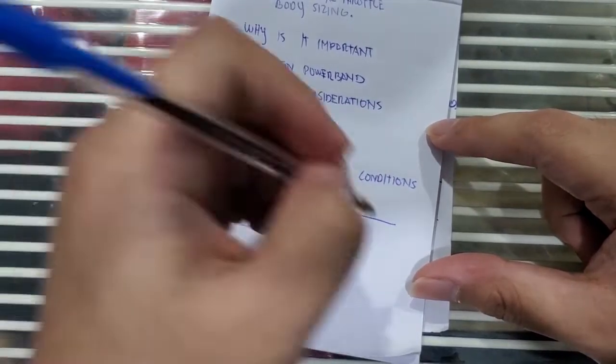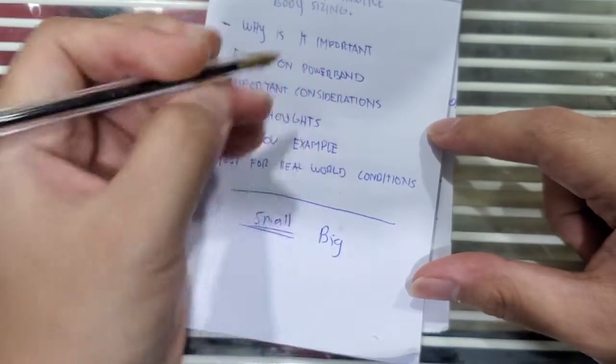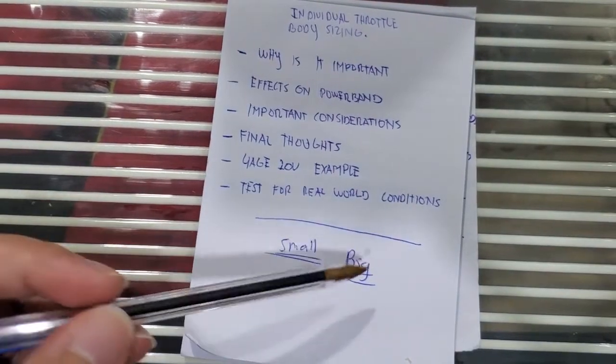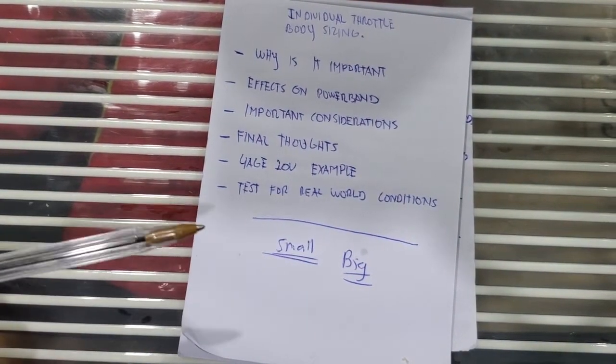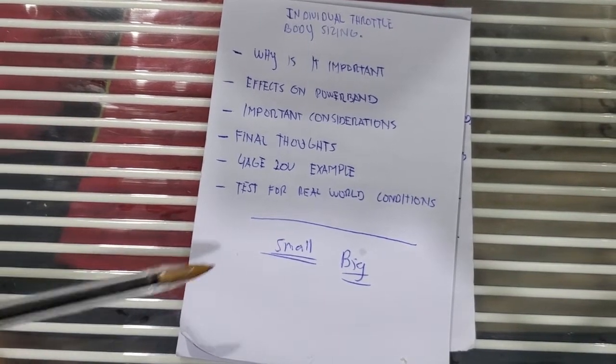But big and small is too vague, so how can you go about this?